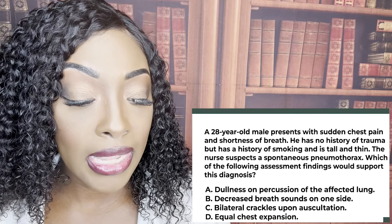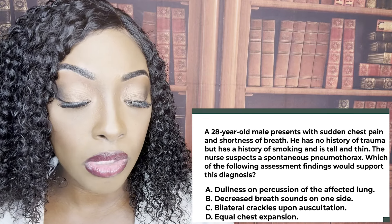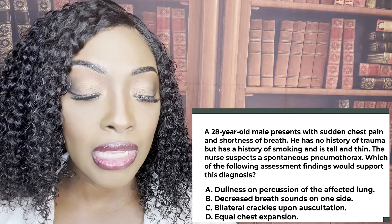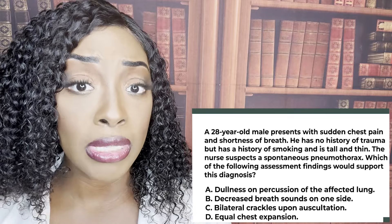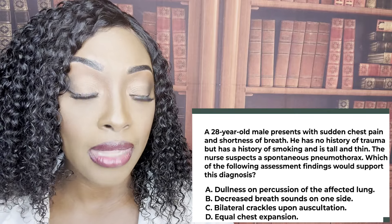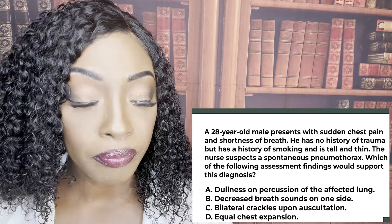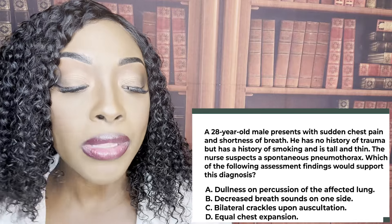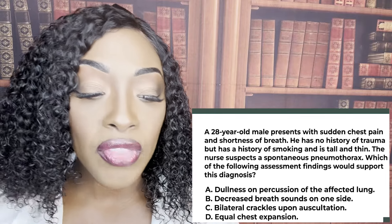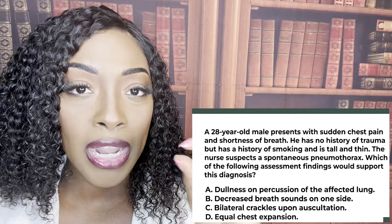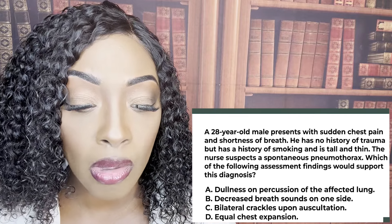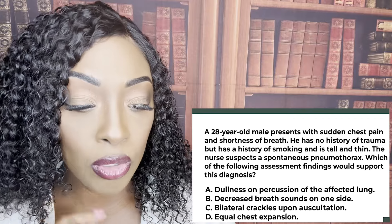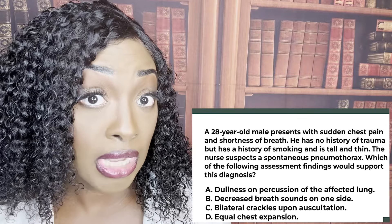The correct answer is B, decreased breath sounds on one side. We're talking about a patient the nurse suspects has a spontaneous pneumothorax. That's when there's a rupture of small air sacs known as blebs on the surface of the lungs. When they rupture, that's what causes a spontaneous pneumothorax.